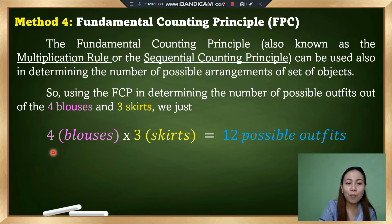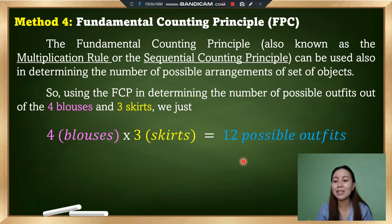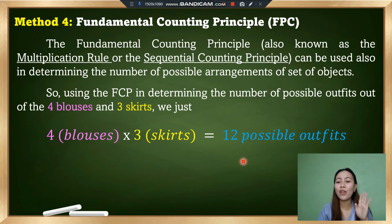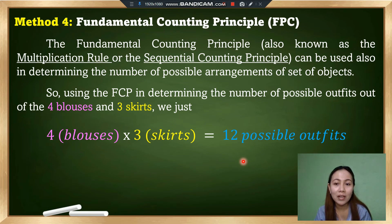All four methods — listing, tree diagram, table, and the Fundamental Counting Principle — give the same answer of 12 possible outfits. This means you can use any of the four methods to illustrate permutation and still arrive at the same number of possible arrangements.